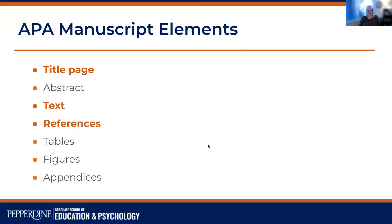I'd like to go on now and talk about the manuscript elements that are required for APA documents. These are all of the manuscript elements within APA, but typically for student papers, you only need the title page, text, and references.